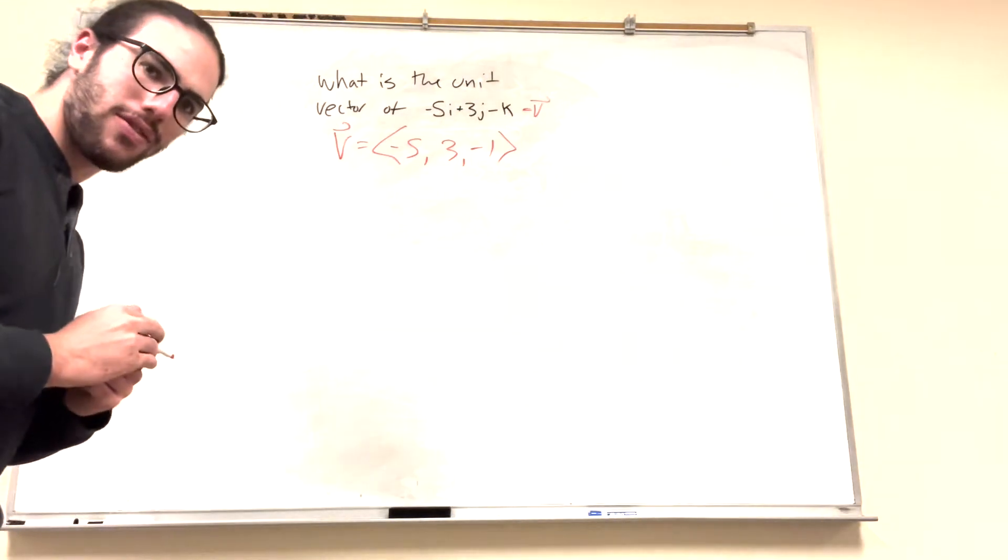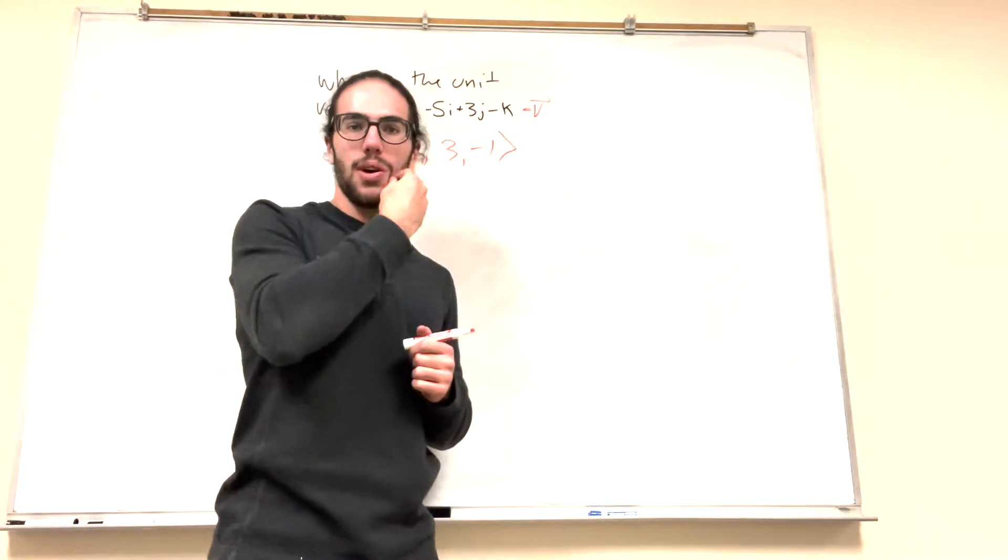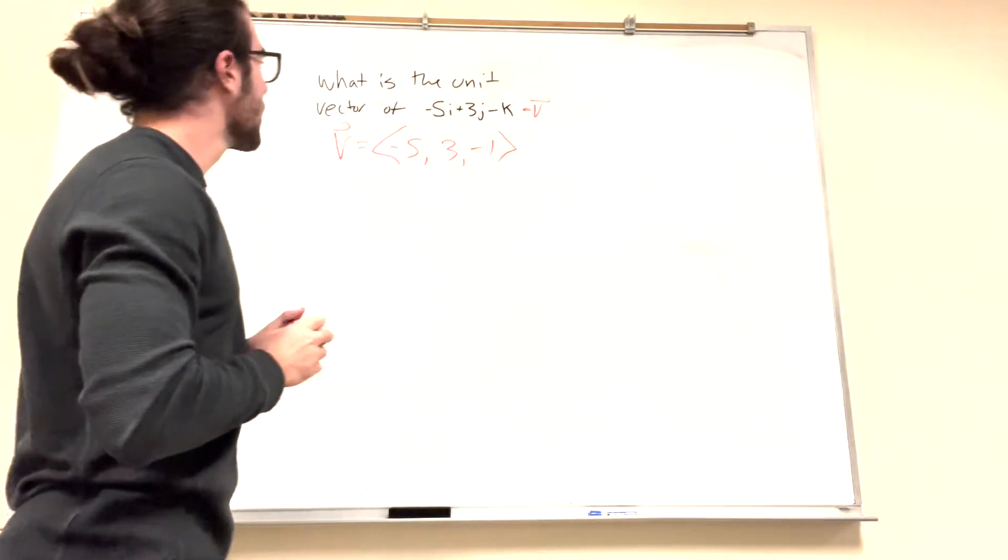So, when we find the unit vector, what is the unit vector? Well, it's the vector in the same direction, but its magnitude is equal to 1. That means its distance is equal to 1.